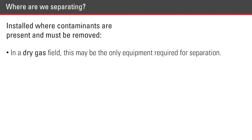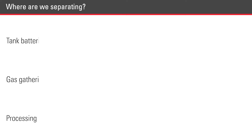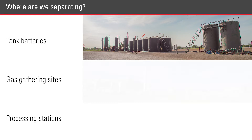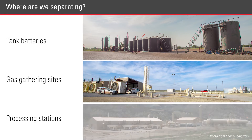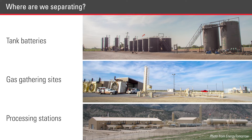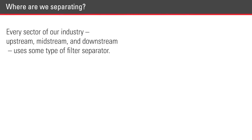In a dry gas field, this may be the only equipment required for separation. Filter separators are used at tank batteries as well as gathering sites and processing stations. Every sector of our industry — upstream, midstream, and downstream — uses some type of filter separator.